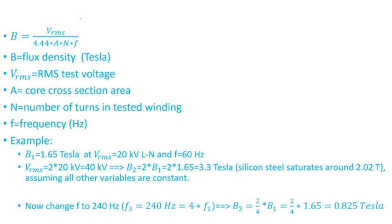Here's the equation that relates the flux density, the RMS voltage, number of turns, frequency, and so forth. B equals V_RMS divided by 4.44 times A times N times f. B is the flux density in Tesla. V_RMS is the RMS test voltage. A is the cross-section area of the core. N is the number of turns of the winding to which the voltage is applied. f is the frequency in Hertz.